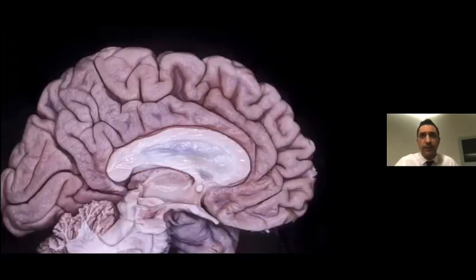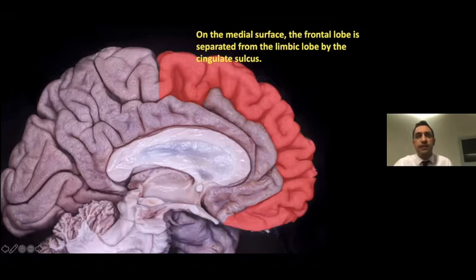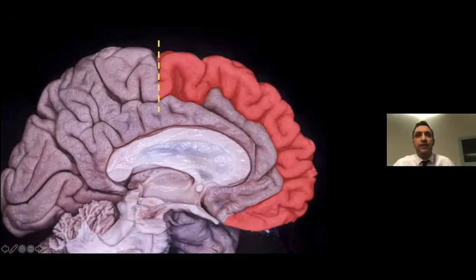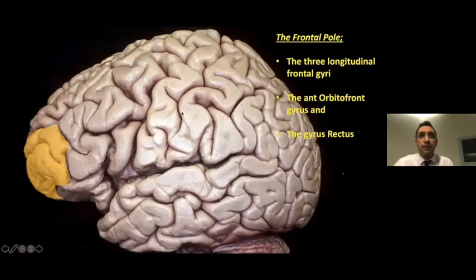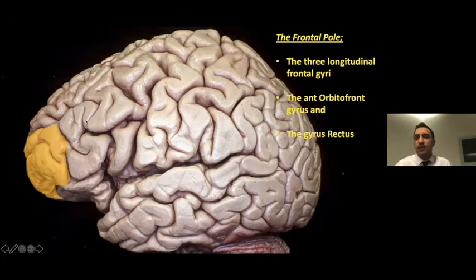On the medial surface, the frontal lobe is separated from the limbic lobe — the cingulate gyrus — by the cingulate sulcus. Posteriorly, the posterior border of the frontal lobe on the medial side is the continuation of the central sulcus. The frontal pole is located in front of the frontal marginal sulcus, and it consists of the anterior part of the three long frontal gyri — superior, middle, and inferior frontal gyrus — and the orbital frontal gyrus and gyrus rectus medially.